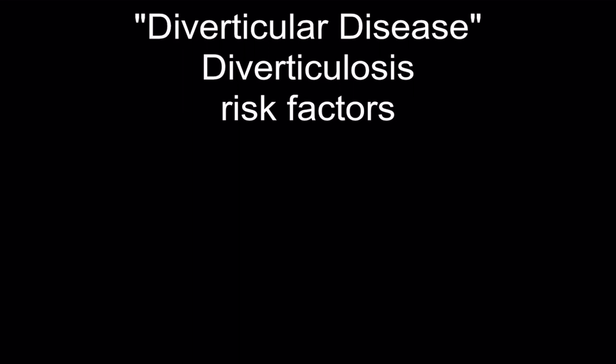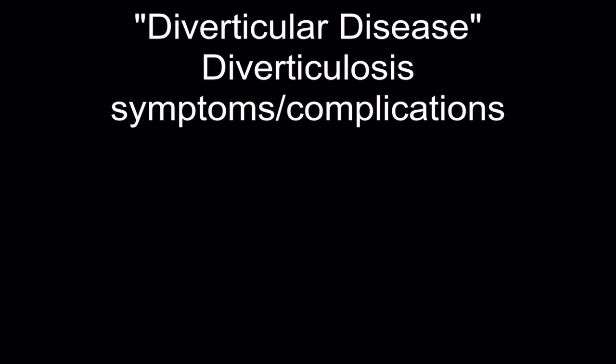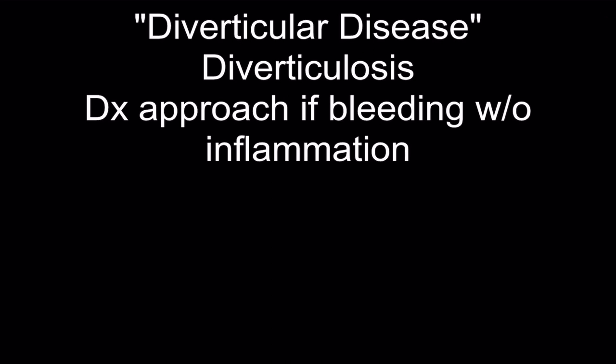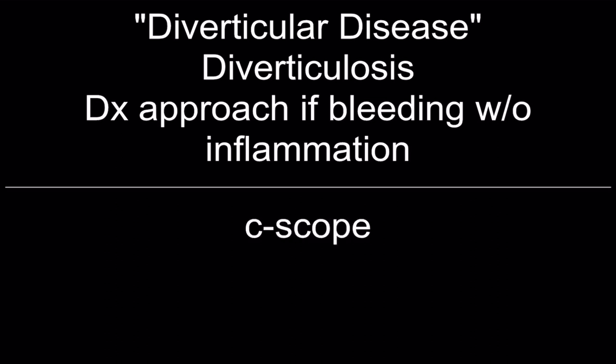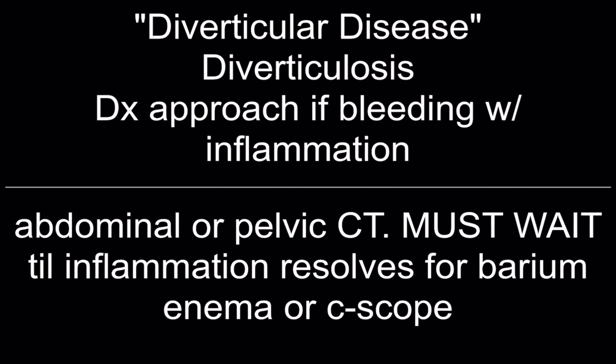Diverticulitis risk factors: low fiber diets, chronic constipation, family history, and age. Diverticulosis symptoms and complications: bleeding. Diagnostic approach if bleeding without inflammation: colonoscopy. Diagnostic approach if bleeding with inflammation: abdominal or pelvic CT — must wait until inflammation resolves for barium enema or colonoscopy. Treatment of diverticulosis: high fiber diet.